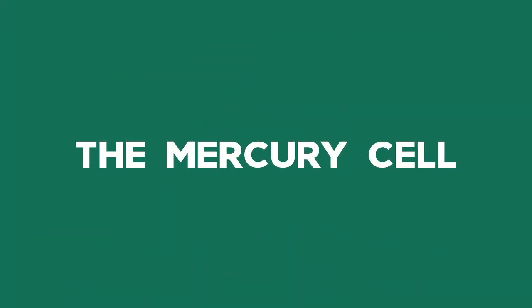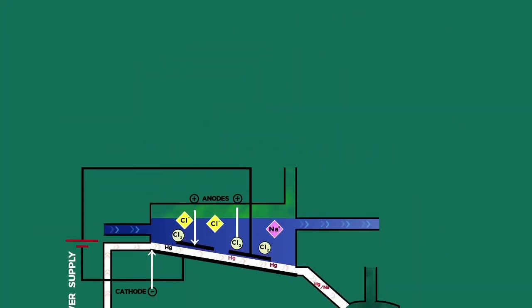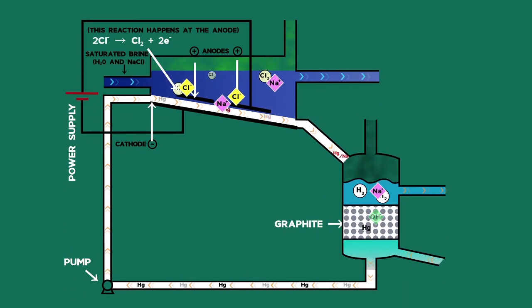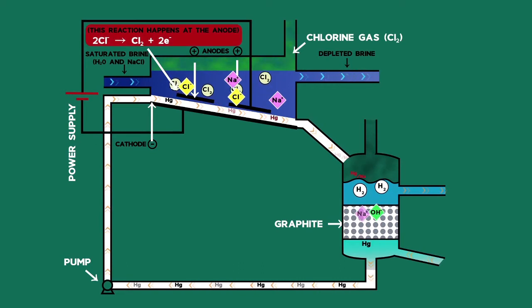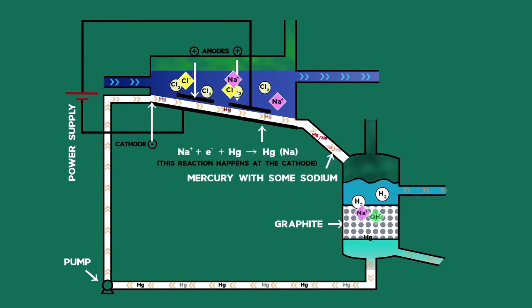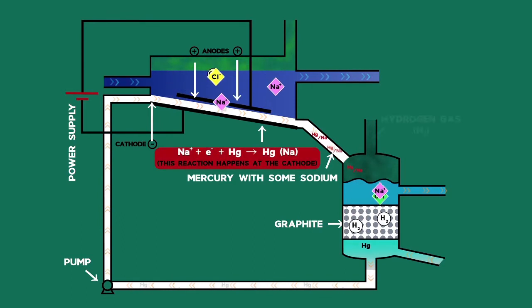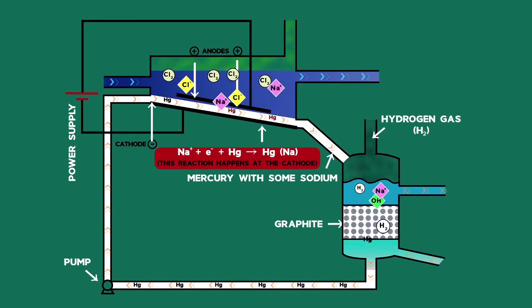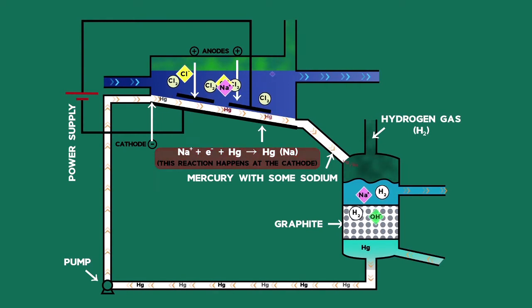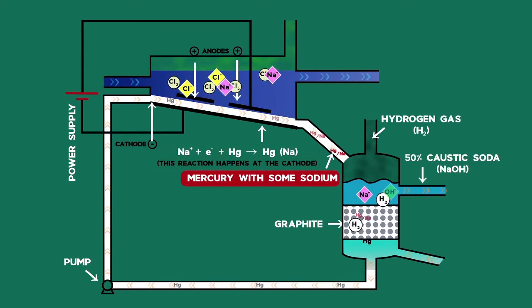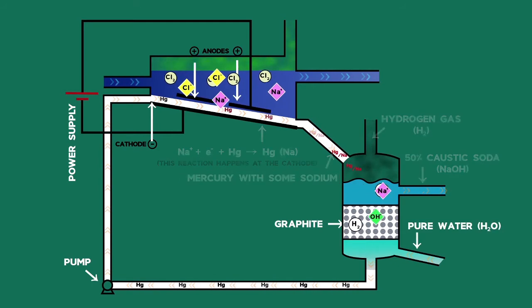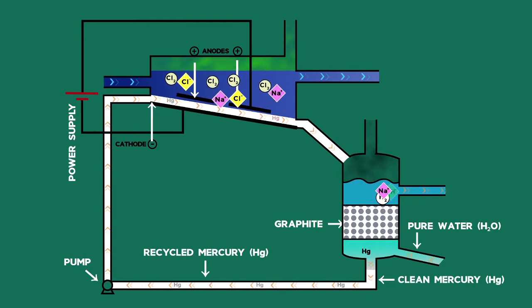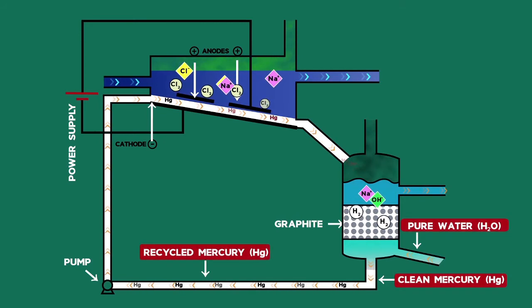The third and last type of cell is being phased out because it makes use of large amounts of toxic mercury metal. The chlorine is made at the anode. But the difference is that the sodium ions are forced to be reduced at the cathode made of mercury metal. The reason this is possible is because mercury dissolves the sodium that is formed, keeping it from reacting with the water. The mercury is then reacted with the water elsewhere in the process.